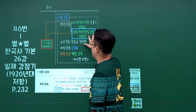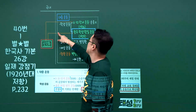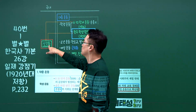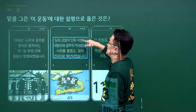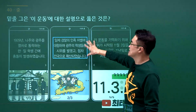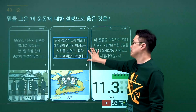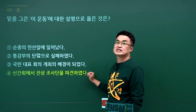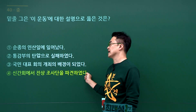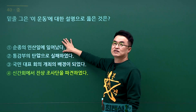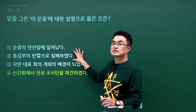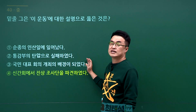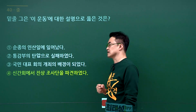광주학생항일운동 문제입니다. 광주학생항일운동에 진상조사단을 파견했던 조직이 신간회입니다. 문제에서 광주학생들이 봉기한 내용이 나왔고 이 운동에 대한 설명으로 신간회가 진상조사단을 파견했다는 4번이 정답입니다. 순종 인산에 이어 일어난 것은 6.10 만세운동, 통감부 탄압으로 실패한 것은 국채보상운동, 국민대표회의 개최의 배경은 이승만의 국제연맹 청원입니다. 정답은 4번입니다.